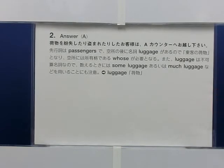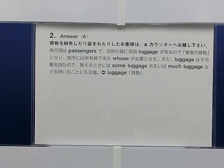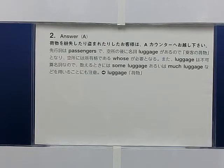The answer is A. 荷物を紛失したり盗まれたりしたお客様は、Aカウンターへお越しください。先行詞はPassengersで、空所の後に名詞Luggageがあるので、「乗客の荷物」となり、空所には所有格であるWhoseが必要となる。また、Luggageは不可算名詞なので、数えるときにはsome luggageあるいはmuch luggageなどを用いることにも注意。